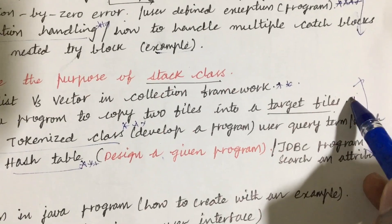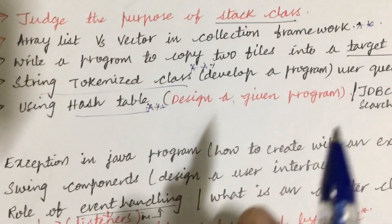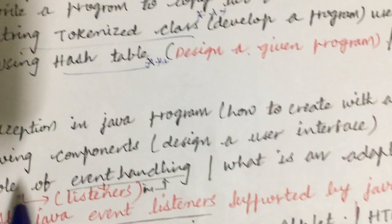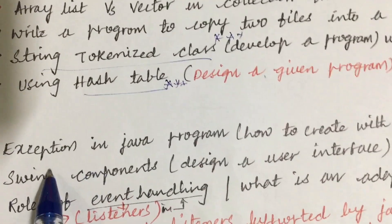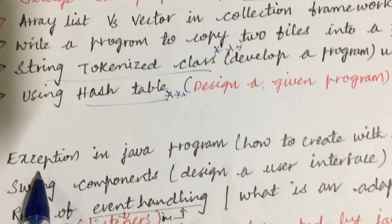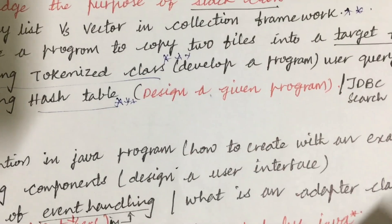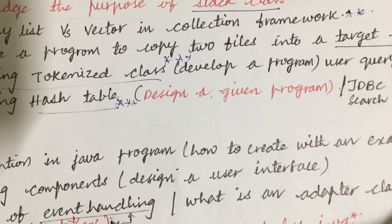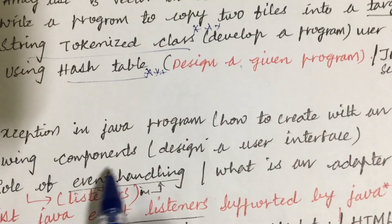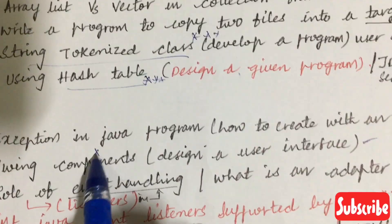Design a JDBC program to search for attributes — from this part we can expect the seventh question. The fifth unit is all about exceptions in Java programs and how to create them with an example. Please study that thoroughly.